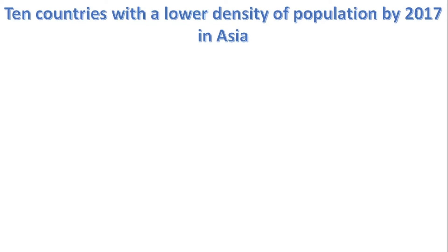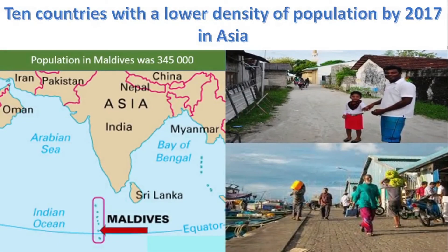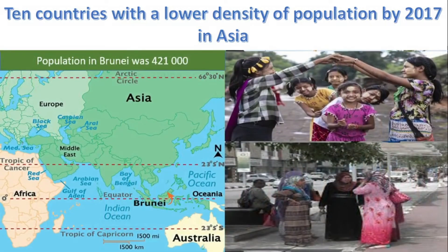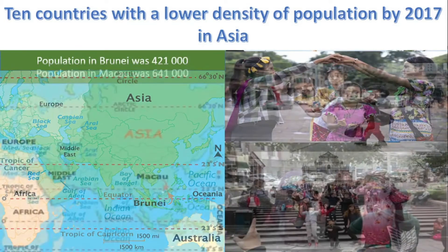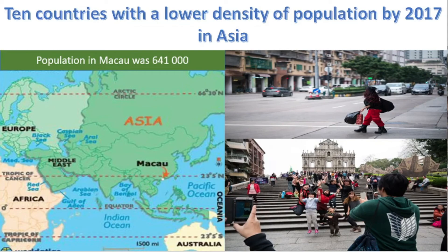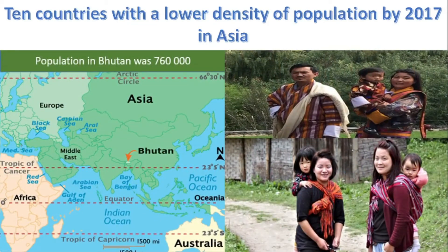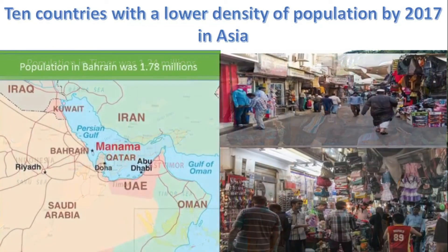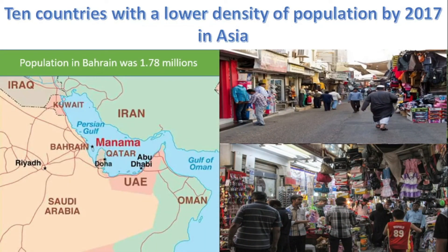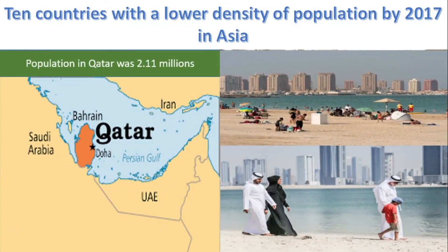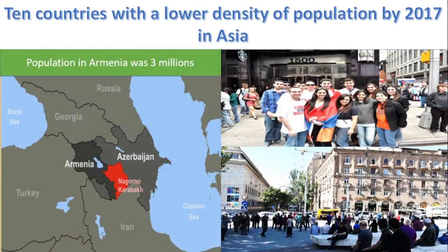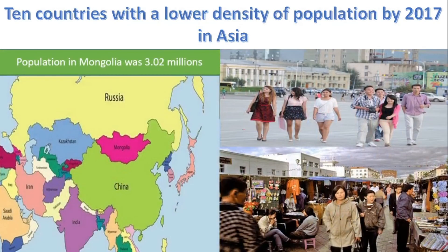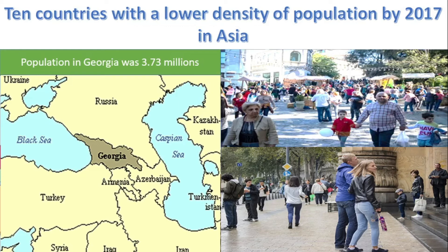Now we pay our attention to 10 countries with a lower density of population in Asia by 2017. Population in Maldives: 345,000. Population in Brunei: 421,000. Population in Macau: 641,000. Population in Bhutan: 760,000. Population in Timor: 1.24 million. Population in Bahrain: 1.78 million. Population in Qatar: 2.11 million. Population in Armenia: 3 million. Population in Mongolia: 3.02 million. Population in Georgia: 3.73 million.